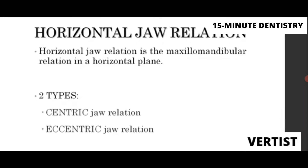In horizontal jaw relation, there are two types: centric and eccentric. At undergraduate level, we don't record the eccentric jaw relations — we record the centric jaw relation. Horizontal jaw relation is the relation of the maxilla to the mandible in the horizontal plane or the anterior-posterior plane.